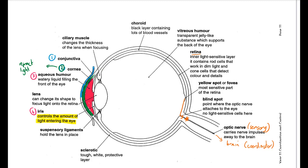Light also has to pass through the pupil, which isn't actually a structure — it's a hole at the front of the eye. The pupil appears black because light that enters doesn't come back out; you're actually looking into the back of the eye through it. The next part light travels through is the lens, a circular structure that can change shape to focus light on the retina.